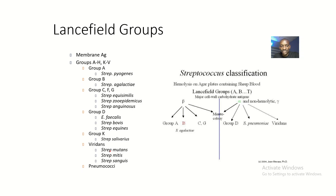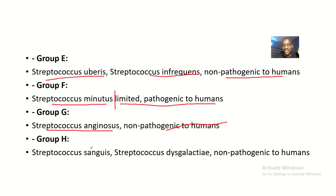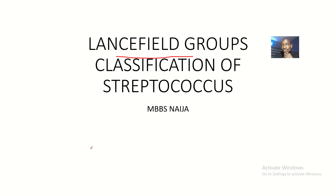This final slide is a summary of the most important Streptococcus species in each group. You can pause the video and write it down. Group A, Group B, Group C, F, G — the most important ones — and Group D and Group K important ones as well. That's it for the Lancefield group classifications of Streptococcus. See you in the next one.